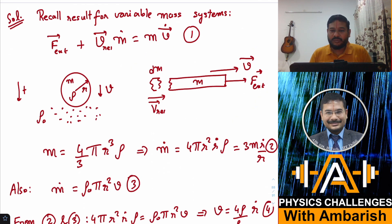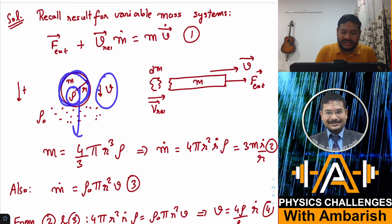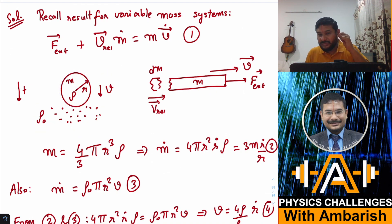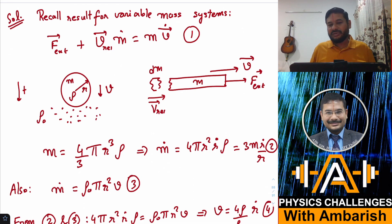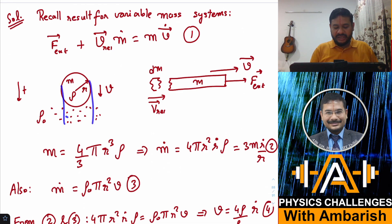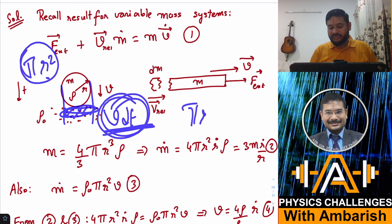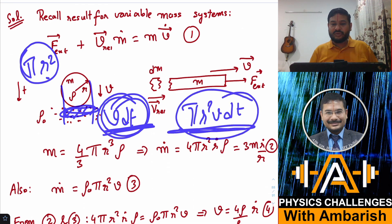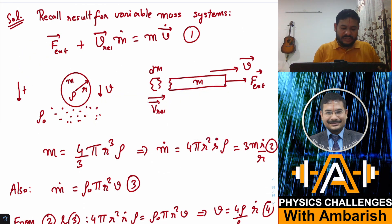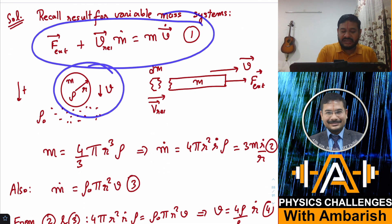In our case, the raindrop is falling with velocity V. Let rho be its density and rho-naught be the local droplet material density in the cloud — different from rho because it includes air spacing. In time dt, the drop goes down a distance V·dt, sweeping a cross-section of π·r². So the volume swept in time dt is π·r²·V·dt, and the mass collected is rho-naught × π·r²·V·dt. This much mass gets attached to the raindrop in time dt.